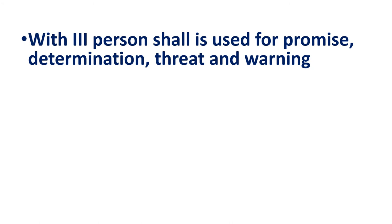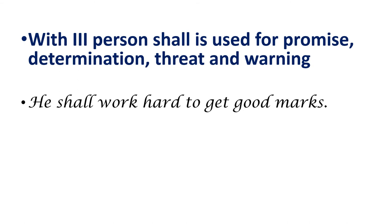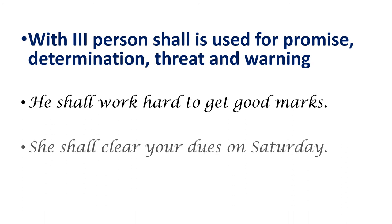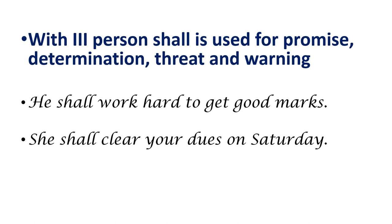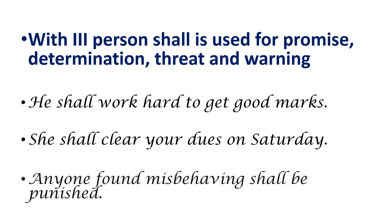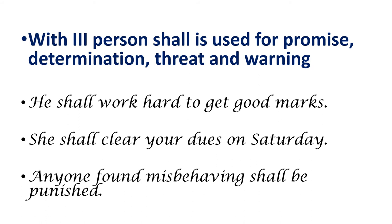With third person — he, she, it, they — shall is used for promise, determination, threat, and warning. जैसे: 'He shall work hard to get good marks' (उसे मेहनत करनी पड़ेगी अच्छे marks लाने के लिए). 'She shall clear your dues on Saturday' (वो Saturday तक आपके पैसे लोटा देगी). 'Anyone found misbehaving shall be punished' (कोई भी गलत व्यवहार करते हुए पकड़ा गया तो उसे सजा मिलेगी).